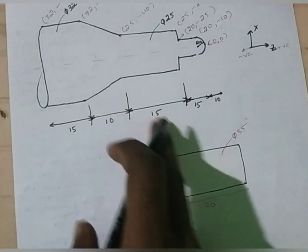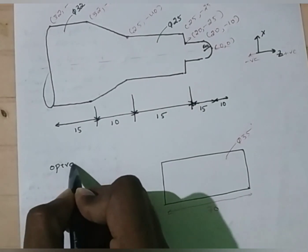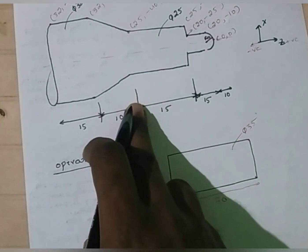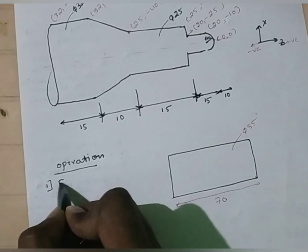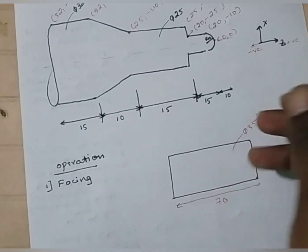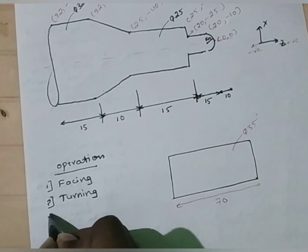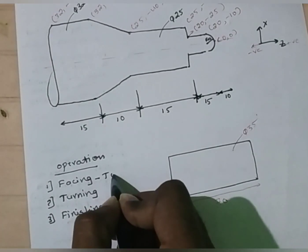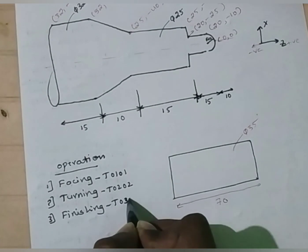Now, list the operations to be performed in order to convert this billet to the given geometry. The operations to be performed: we have to convert this billet to this geometry. The first operation is facing — we have to reduce the length. Next, after facing, we have to do step turning. Finally, we have to do a finishing operation. For facing, I am going to use T0101 tool. For turning, I am going to use T0202 tool. And for finishing, I am going to use T0303 tool.